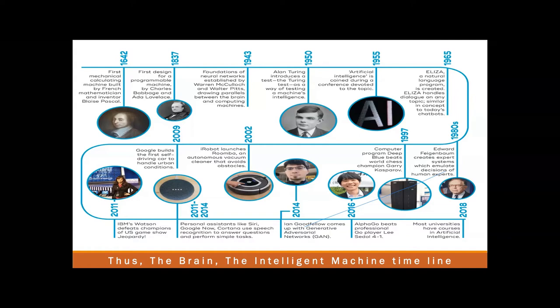After that, the major breakthrough came in 1997 where Deep Blue beat the world chess champion Gary Kasparov, which was something big those days. In 2002, iRobot launched Roomba, an autonomous vacuum cleaner that avoids obstacles — that was a beautiful moment. Then in 2009, Google built the first self-driving car to handle urban conditions.